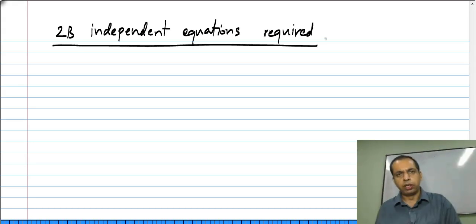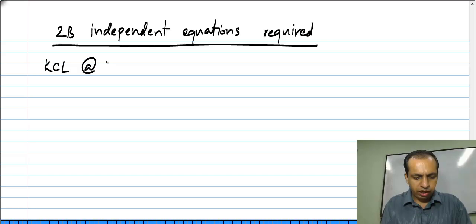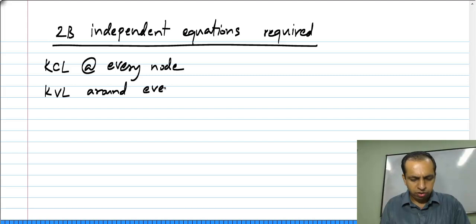Now, how do we get these? What are the principles we use to solve our circuit? We have Kirchhoff's current law at every node and Kirchhoff's voltage law around every loop.